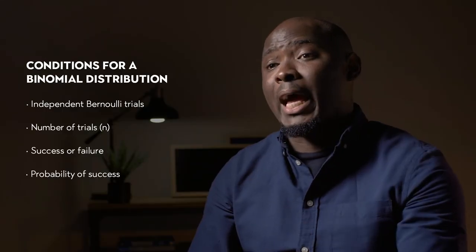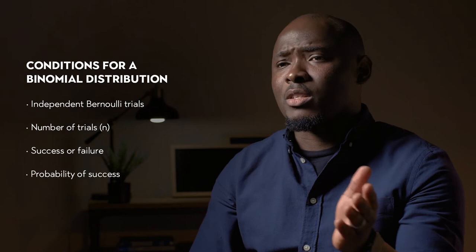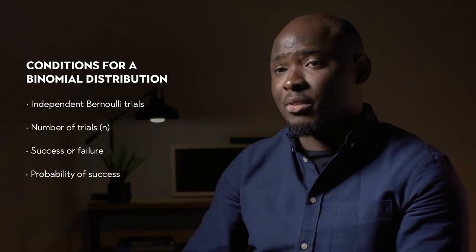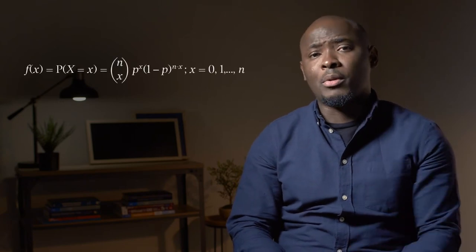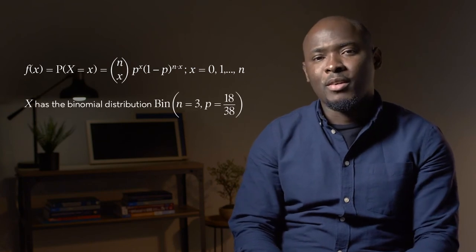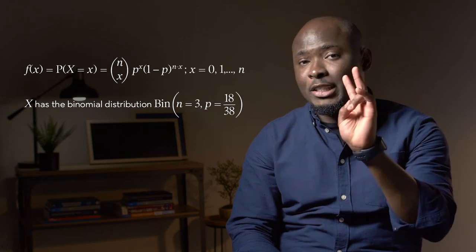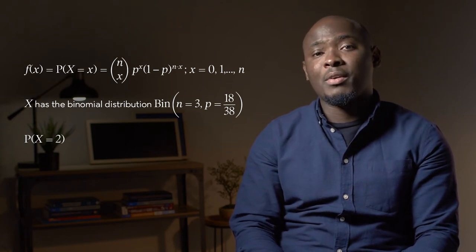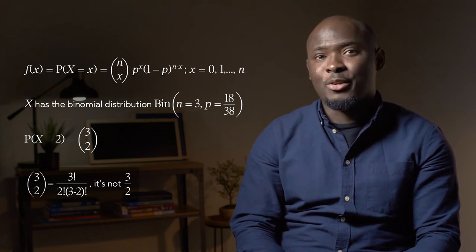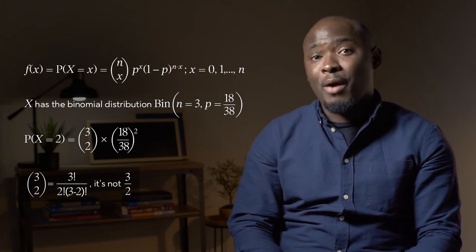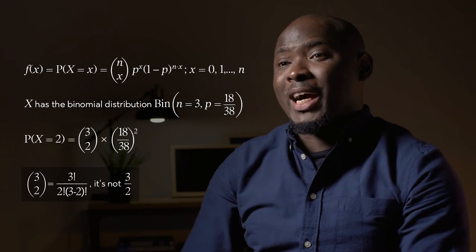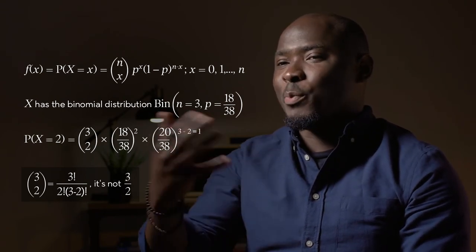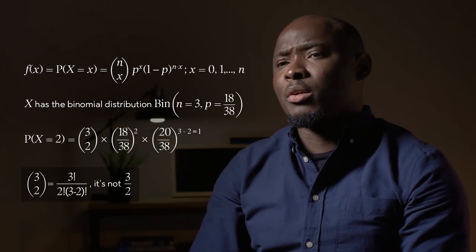Now that we understand why the binomial formula works, let's use it. For each trial we have two outcomes — success and failure — a number of trials n, and independence across those trials. We want to know the probability of having exactly two successes in three trials. Using the binomial formula, that means 3 choose 2, multiplied by the probability of success — which is 18 over 38 — raised to the power of 2, multiplied by the probability of failure — which is 20 over 38 — raised to the power of the number of failures, which is 3 minus 2, equal to 1.